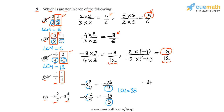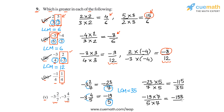So -23/7 can be written as (-23×5)/(7×5), which gives us -115/35. And -19/5 can be written as (-19×7)/(5×7), which is -133/35. So if we now compare the numerators, -115 is greater than -133. So -115/35 is greater than -133/35. In other words, the first number, -3 2/7, is greater than -3 4/5. So the answer for part 5 is the first number.